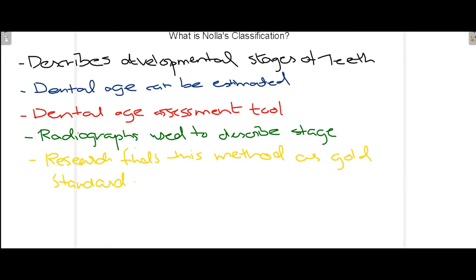Nolla's classification is used to determine the dental age of a patient, and research has concluded that most of the time the dental age coincides with the chronological age of the patient. Nolla's classification is also one of the age assessment tools used by researchers as well as dentists.